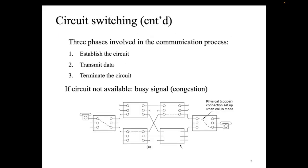Coming back to this — once the circuit is established, the two devices can actually have their voice communication. These physical mediums are usually physical connections — it could be copper-based or fiber optic-based. Today we have fiber optic, so fiber optic would be the approach to handle the actual physical medium of transmission across two devices communicating on a circuit switching network.